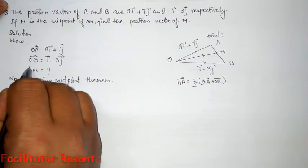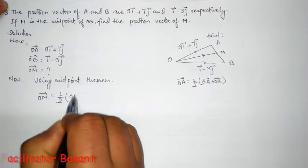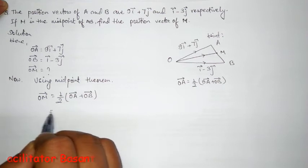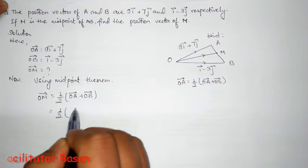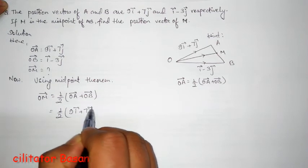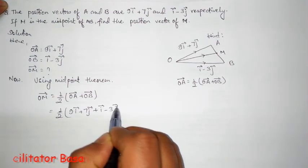OM vector equals half of OA vector plus OB vector. That is, half times (9i plus 7j plus i vector minus 3j vector).